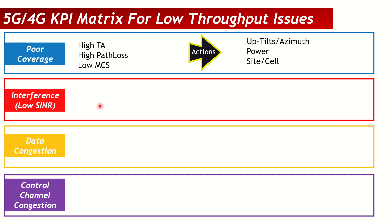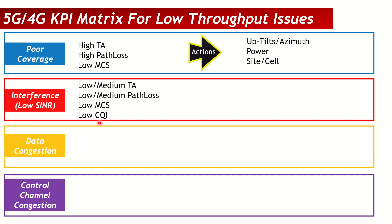Another issue is interference. In an interference scenario, TA will be low or medium — users are not very far away — and path loss will also be low or medium. However, you will have low MCS and also low CQI (channel quality indicator). If CQI is low — indicating higher interference — but TA and path loss show users are not far away, that indicates an interference-limited scenario where users have lower SINR, causing lower throughputs.